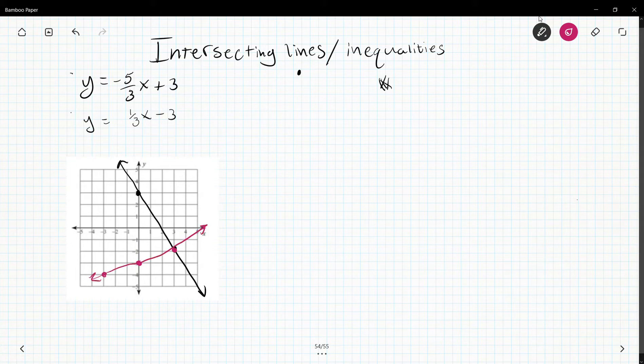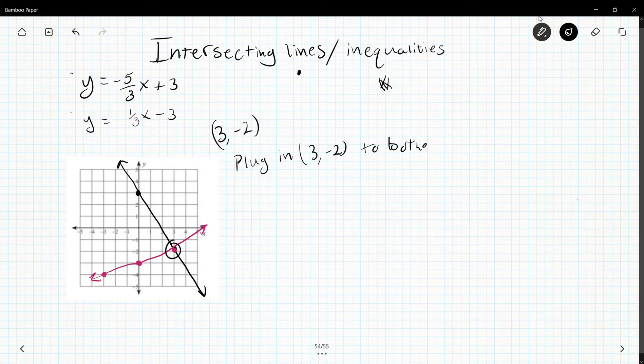So the point of intersection is where they cross. And in this case, it is the coordinate three comma negative two. So this tells me if I plug in three negative two to both equations, I will have a true statement. And what I mean is the top equation will be correct, and the bottom equation will be correct.